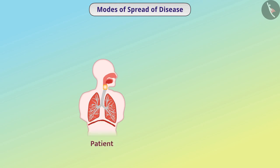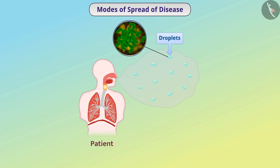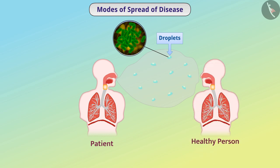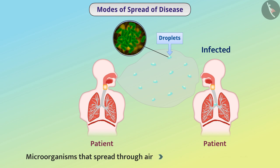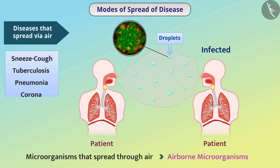When a person sneezes or coughs, some droplets come out of their mouth. These droplets contain microorganisms. If any other person is near the patient, the droplets enter their body and infect them. Microorganisms of some diseases spread through air and are called airborne microorganisms, and the diseases that spread through air are called airborne diseases. If a person is suffering from an airborne disease, he should not go to crowded places.